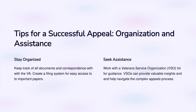Organization and Assistance. Stay organized: keep track of all documents and correspondence with the VA, and create a filing system for easy access to important papers. Seek assistance: work with a Veterans Service Organization (VSO) for guidance. VSOs can provide valuable insights and help navigate the complex appeals process.